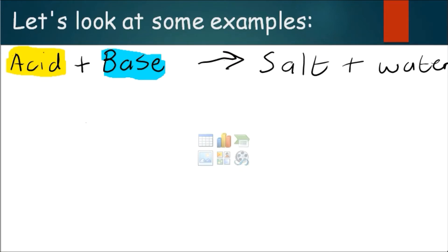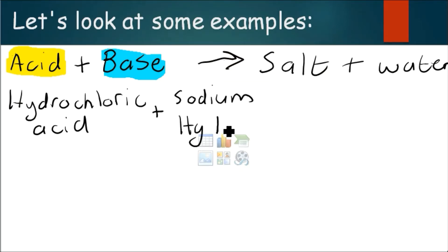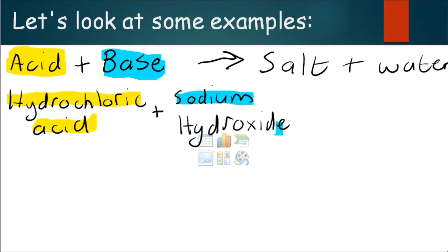Now let's write this specific equation in words for this example. For our first one we are going to use hydrochloric acid, and for our second one, our base, we are going to add sodium hydroxide. Take our yellow highlighter — we highlight our acid, we highlight our base, and let us look at the products.